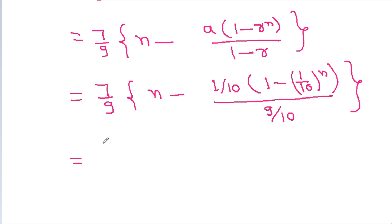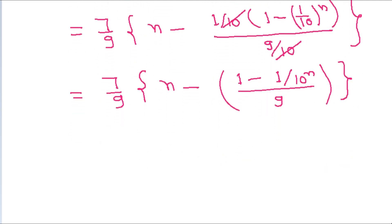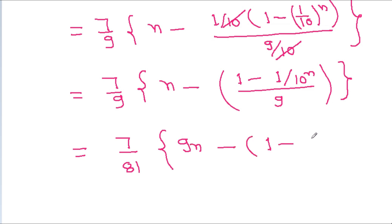And it is 7 by 9 times n minus, and the 10 will get cancelled. And it is (1 minus 1 by 10 to the power n) by 9, giving 7 by 81 times (9n minus 1 minus 1 by 10 to the power n). So this is the value of S_n.